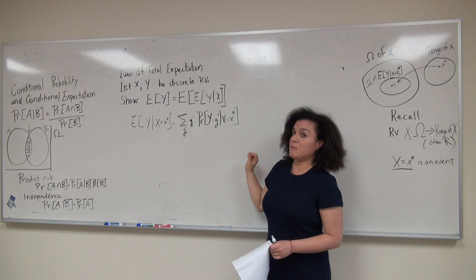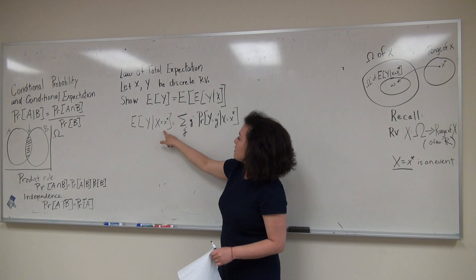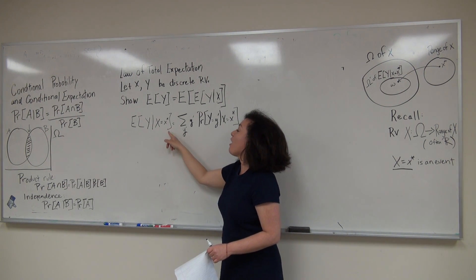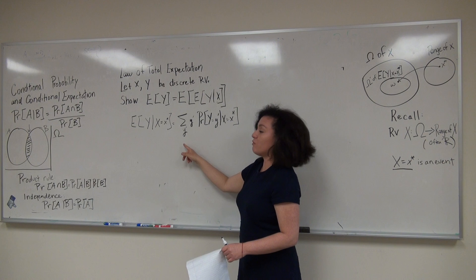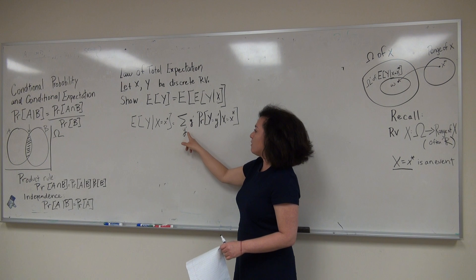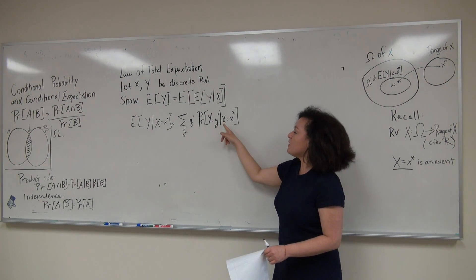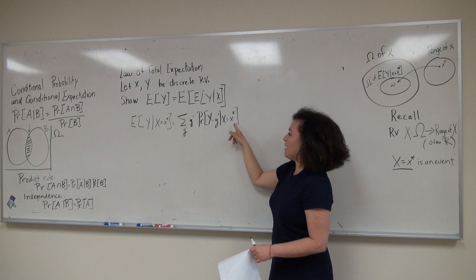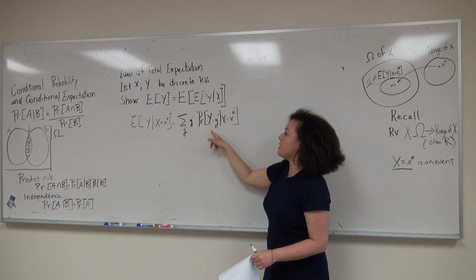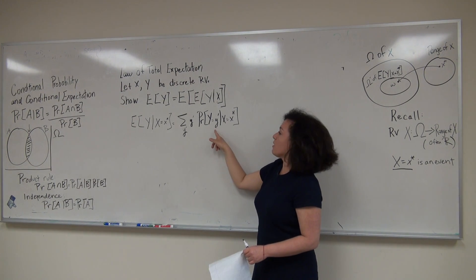I'll also explain the abuse of notation. The expectation of Y given X — conditioning on events — means the random variable X takes on a specific value x'. It equals the summation over all possible values y' of the random variable Y, times the conditional probability that Y equals y' given that X equals x'. The abuse of notation is that we usually don't indicate the events carefully; we use the random variables, but what we actually mean is the event that the random variable takes on a specific value.